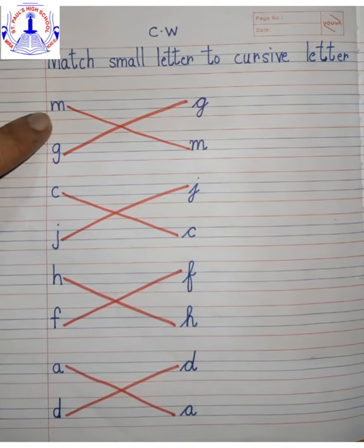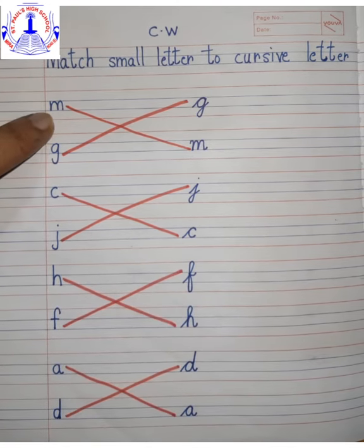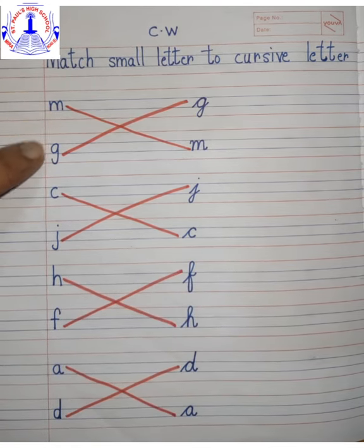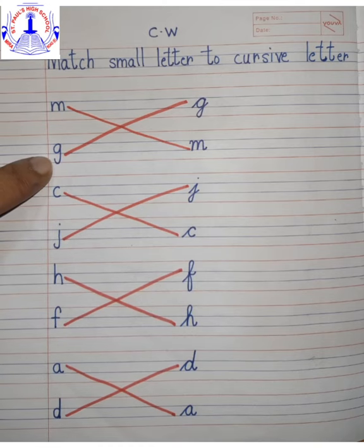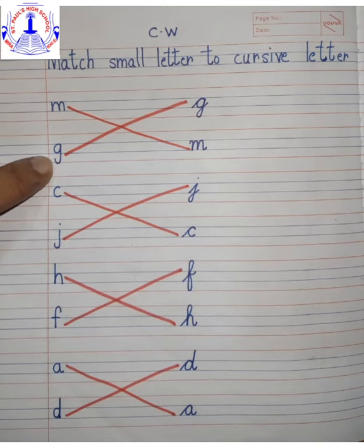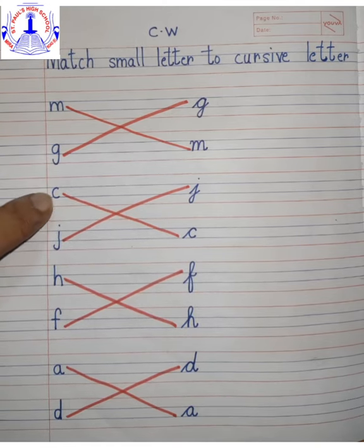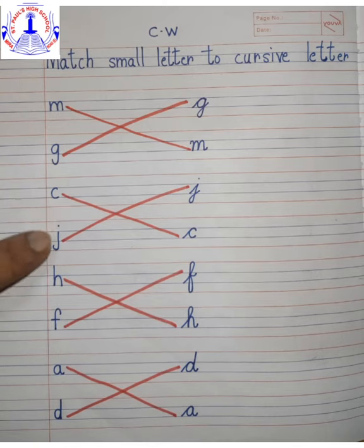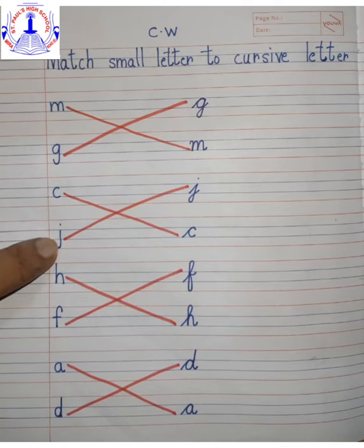M says m — mango. G says g — grapes. C says c — car. J says j — joker.